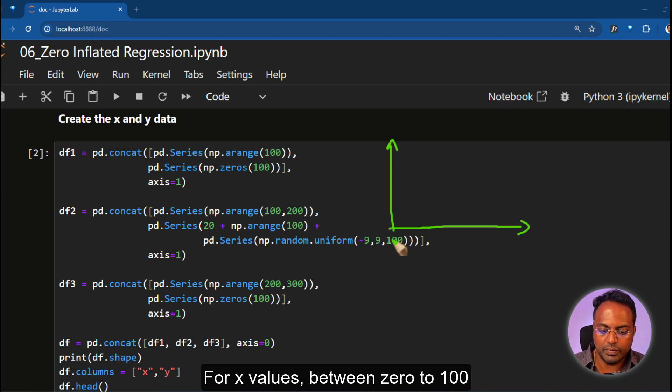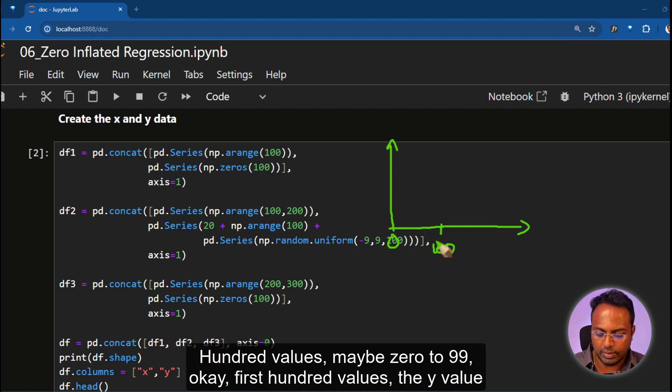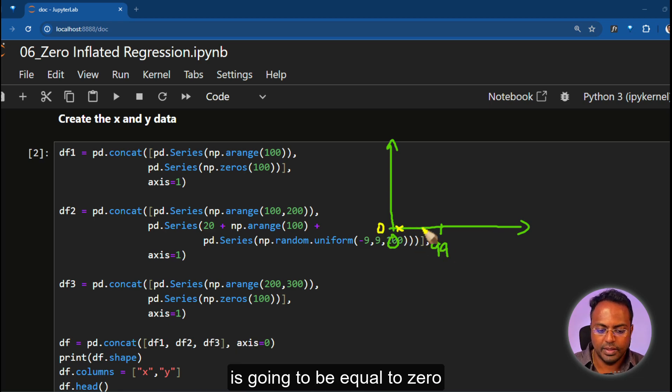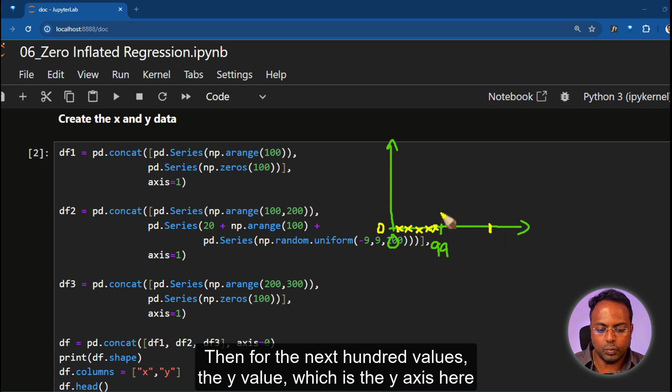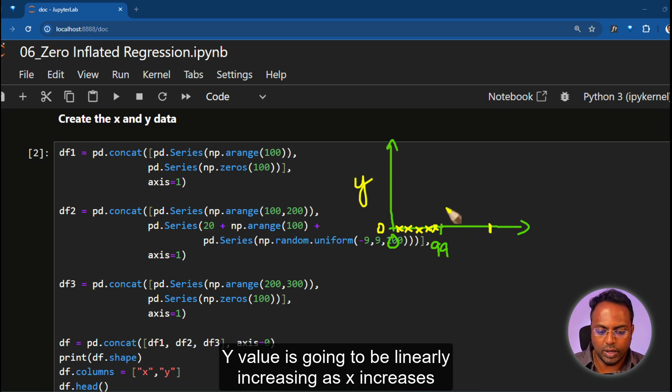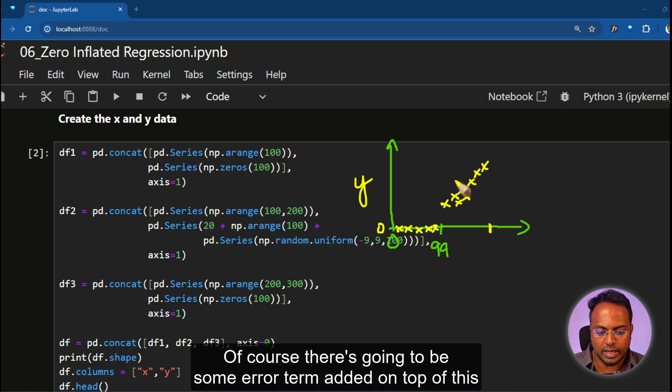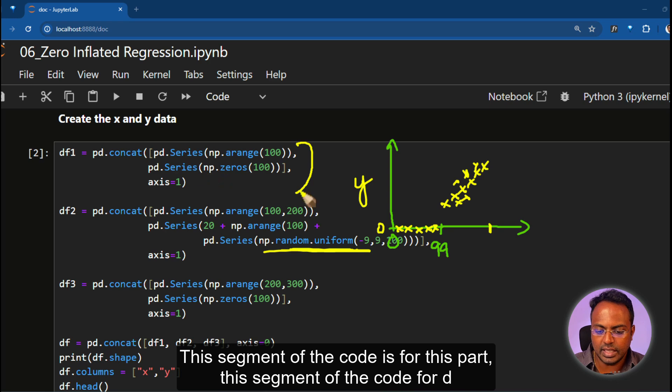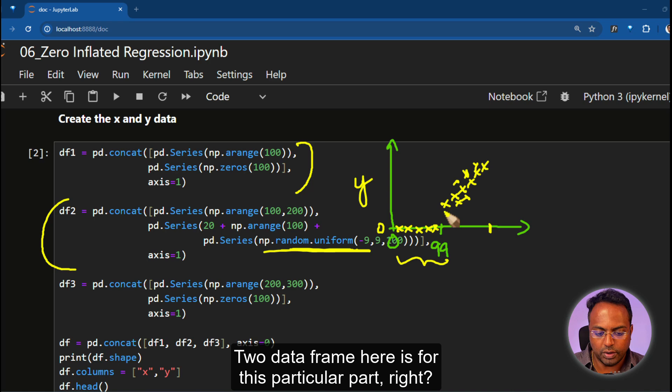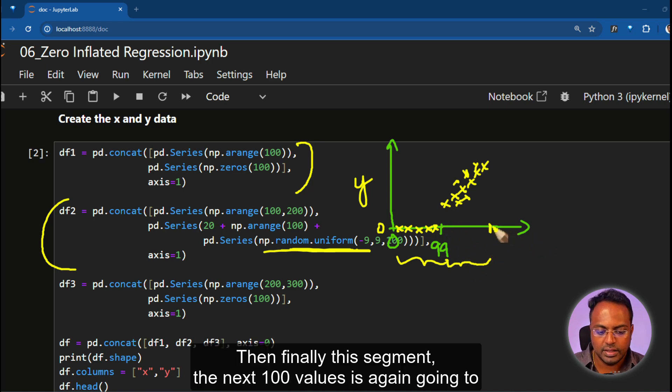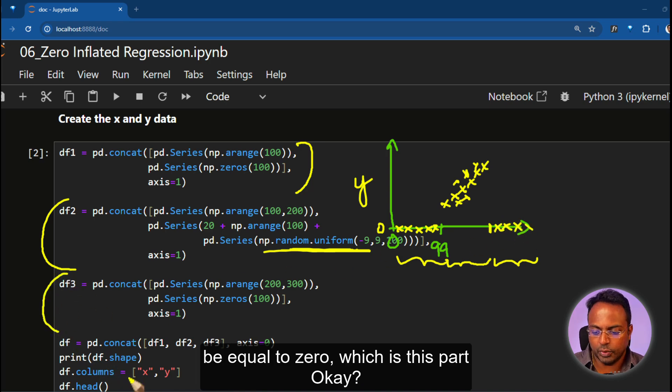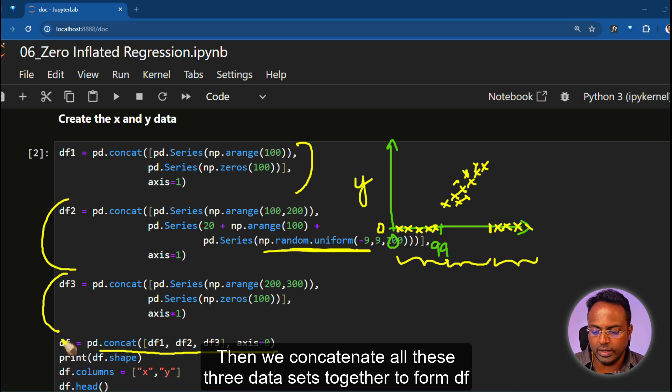Now, what we are going to do is to put together a synthetic dataset whose pattern looks like this. For X values between 0 to 100, first 100 values, the Y value is going to be equal to zero. Then for the next 100 values, the Y value is going to be linearly increasing as X increases. Of course, there's going to be some error term added on top of this. This is what we are doing here. This segment of the code is for this part. This segment of the code for DF2 dataframe here is for this particular part, the next 100 values. And finally, this segment, the next 100 values is again going to be equal to zero, which is this part. Then we concatenate all these three datasets together to form DF.